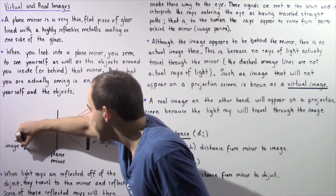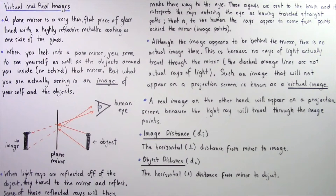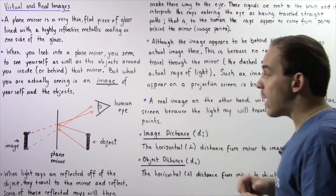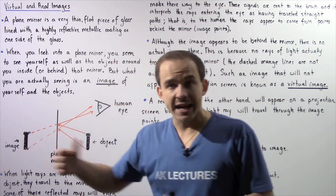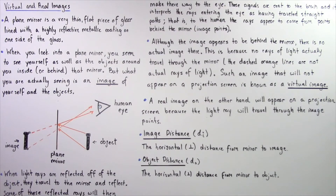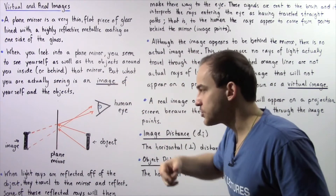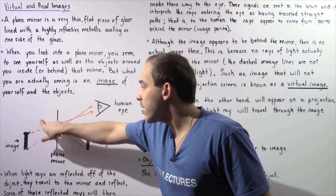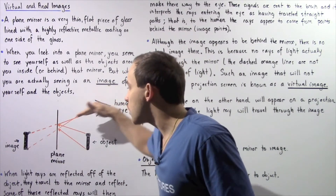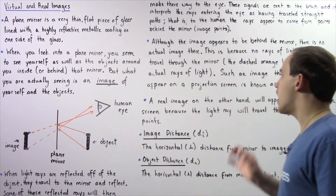We have image point one and image point two, and our brain forms this image. Although the image appears to be behind the mirror, there is no actual object behind that mirror. If a second person looks behind the mirror, there will be no image, because no rays of light actually travel through the mirror. The dashed lines shown in the diagram are not actual rays of light — they are the rays that the human being interprets. Because these rays don't actually travel through the mirror, if we place a projection screen behind the mirror, the image will not appear on that screen.